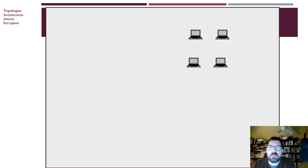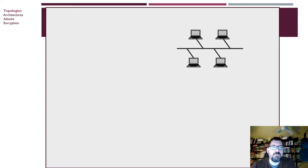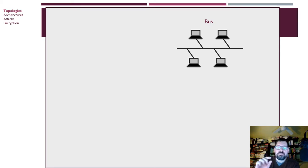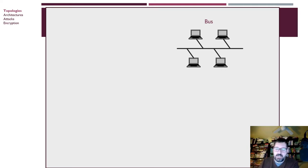Let's talk about topologies and networking. In the old days, computers were in a bus configuration — everyone attached to the same wiring. It was like Christmas lights: if one computer was broken, nothing else would work on that network. If one bulb goes out in your Christmas lights, they all go out.